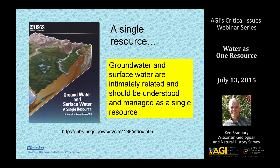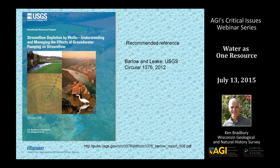I wanted to point out a couple of good publications, both from the U.S. Geological Survey. One is called 'Groundwater and Surface Water as a Single Resource,' which makes the point that groundwater and surface water are really quite intimately related and need to be managed as a single resource. The second is Circular 1376 about groundwater and streamflow depletion by wells. Much of the information presented today is in these two books.